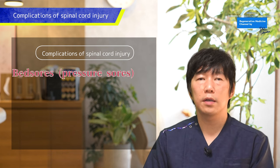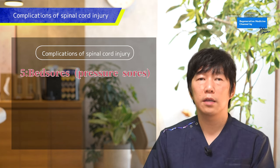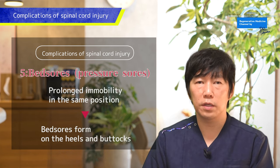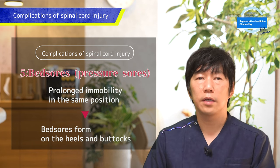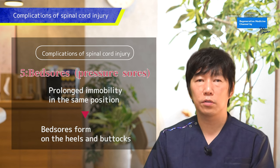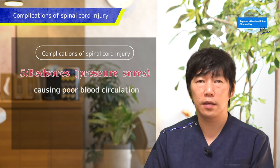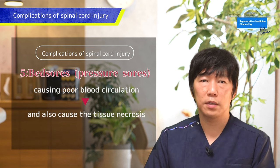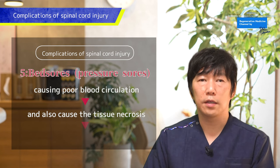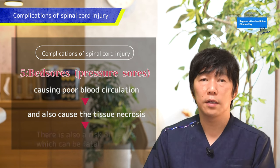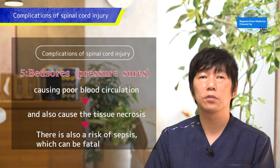The fifth complication is pressure sores, also known as bed sores. Spending long periods in a wheelchair or lying in the same position can lead to pressure sores on areas such as the heels or the coccyx tailbone area. These pressure ulcers result from constant pressure cutting off blood circulation, causing tissue decay and necrosis. They can also lead to sepsis if bacteria enter, which can be life-threatening. The only way to prevent this is to frequently change body position.